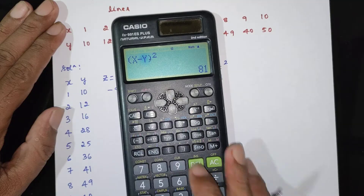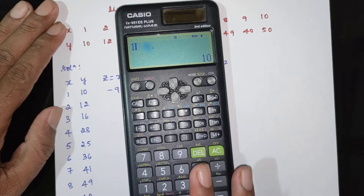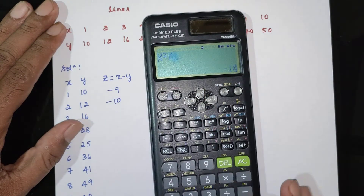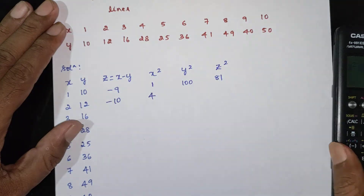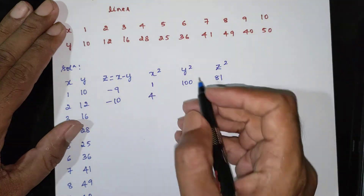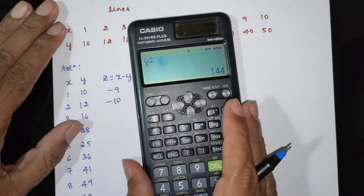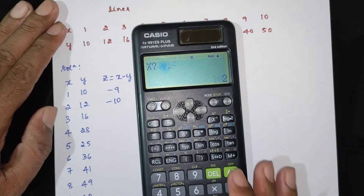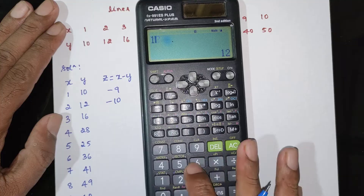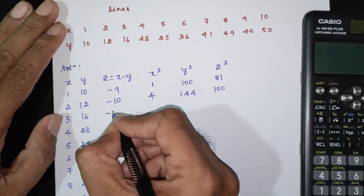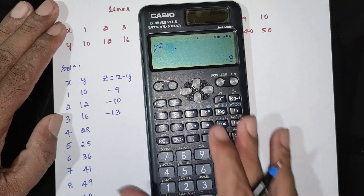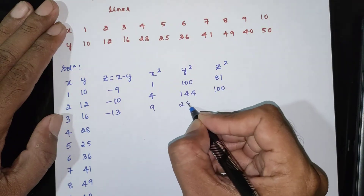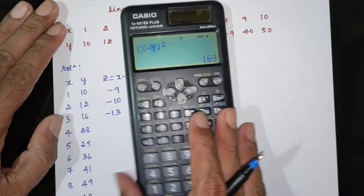For x = 2, y = 12: x² = 4, y² = 144, z² = 100. For x = 3, y = 16: z = 3 minus 16 = minus 13, x² = 9, y² = 256, z² = 169.